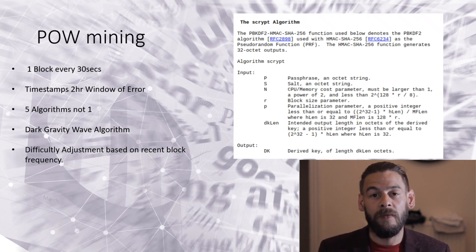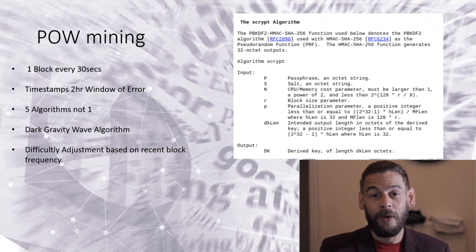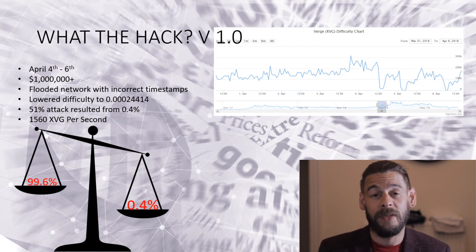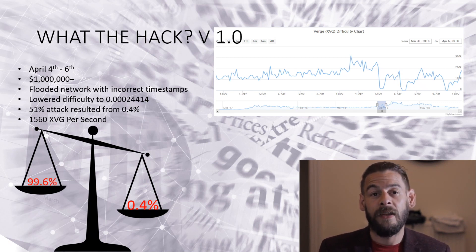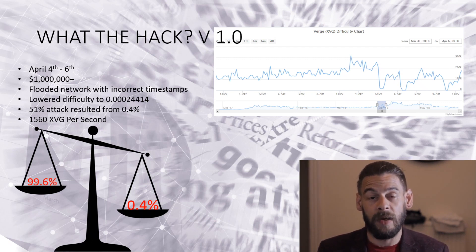If a lot of blocks are being confirmed that have a bigger difference to the timestamp compared to what's actually being kept, this would mean the difficulty is too high and it would be reduced to allow for faster block times. On April 4th to April 6th, Verge was attacked with a 51% attack. Now a 51% attack is usually associated with double-spend attacks — it's where hackers gain control of the network and would typically use this control to double-spend coins.